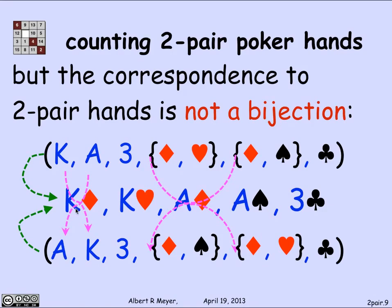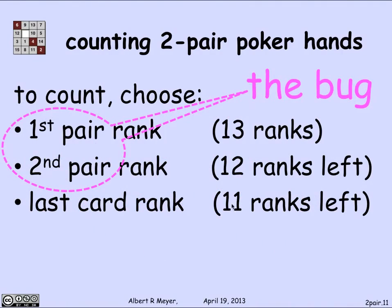The bug in our reasoning is that when we said there are 13 possible ranks for the first pair and 12 for the second, we were distinguishing the first pair from the second pair — and that was a mistake. There isn't a first pair and a second pair. There are simply two pairs, and there's no way to tell which is first and which is second. That's why we got two different six-tuples mapping to the same two-pair hand, depending on which pair we listed first.